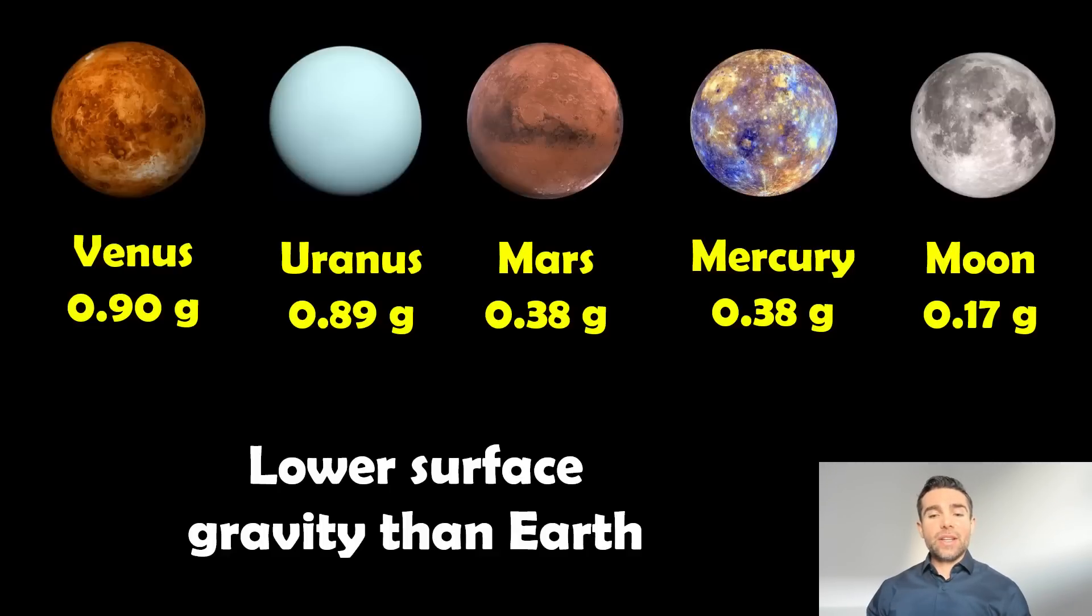So in our solar system, these objects here, these planets and one moon, all have lower surface gravity than the Earth. And that's because they're smaller or they're bigger. So if you actually have a look at the equation again, the bigger the object is, the lower the surface gravity is going to be, but also the more massive that it is. So yes, Uranus is more massive than the Earth, but it's also quite big. So that means that it actually has a lower surface gravity, despite actually being a bigger planet. And the other planets are essentially smaller anyway and lower mass.